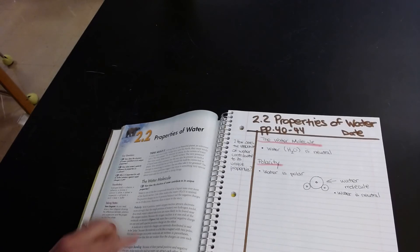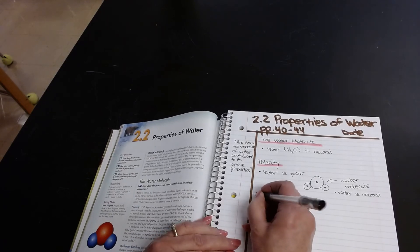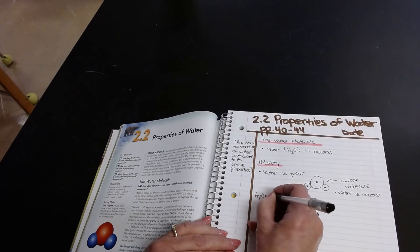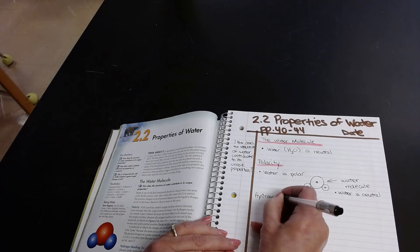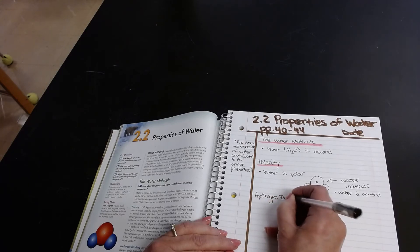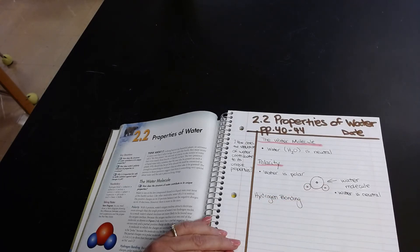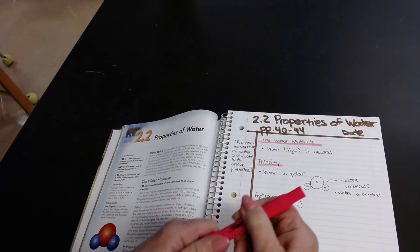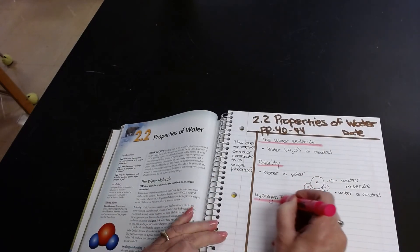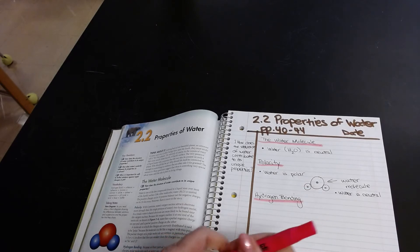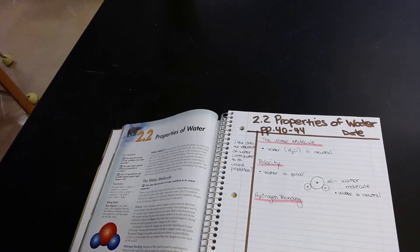Now I'm actually ready for the next part on hydrogen bonding. So I'm going to write hydrogen bonding here. And I'm going to underline it again with my Sharpie. My highlighter, hydrogen bonding, because that's important information.